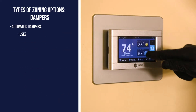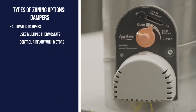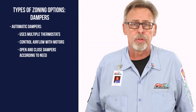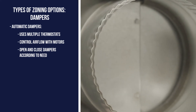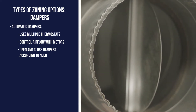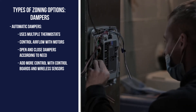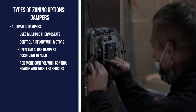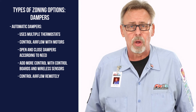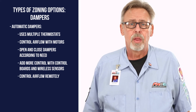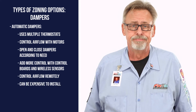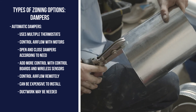Automatic dampers are controlled by multiple thermostats and use motors to control the flow of air. Each system can open and close the dampers according to how much heat or cooling is needed per zone. For example, if not much cooling is needed, the damper will only open partially, or if a lot of heat is in demand, the damper will open all the way. Additionally, control boards and wireless sensors can be used to give you even more control. The benefit of automatic dampers is that they can be controlled remotely and offer a better level of overall temperature control. The downside is that they are more expensive, maintaining them can be costly, and ductwork modifications may be needed to install them.